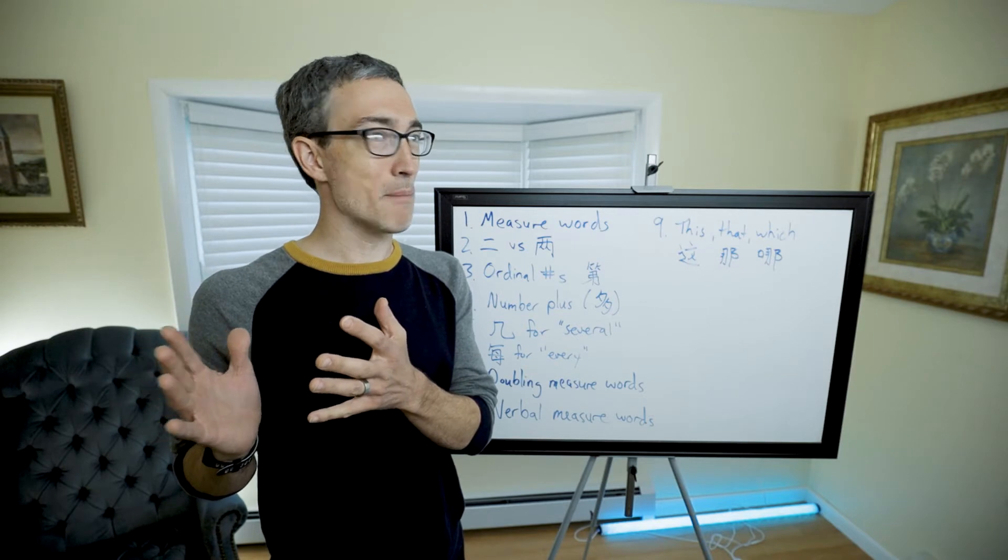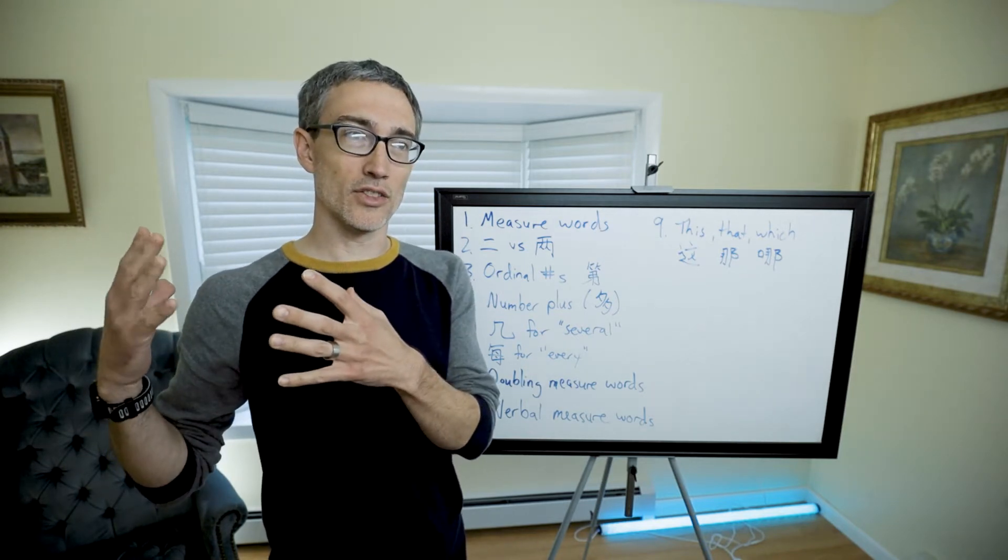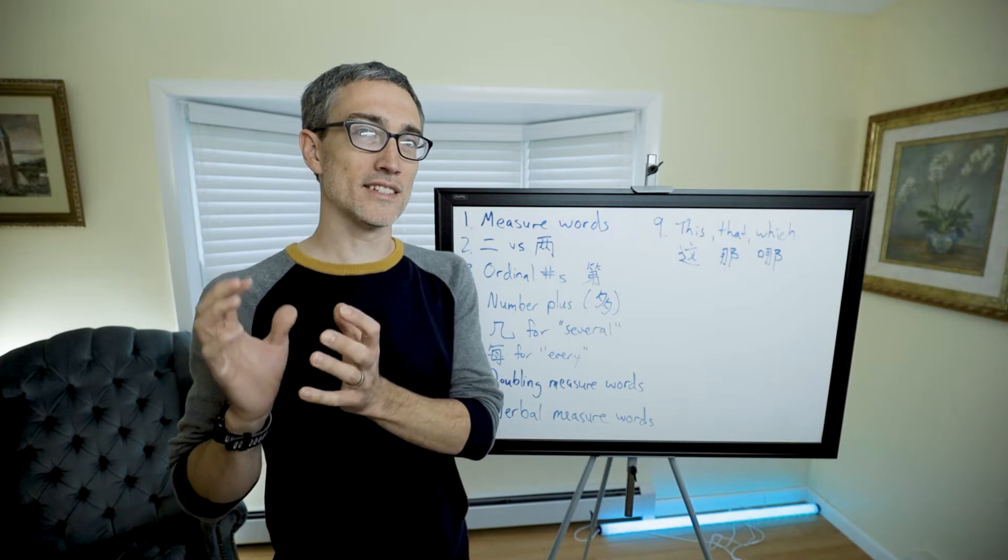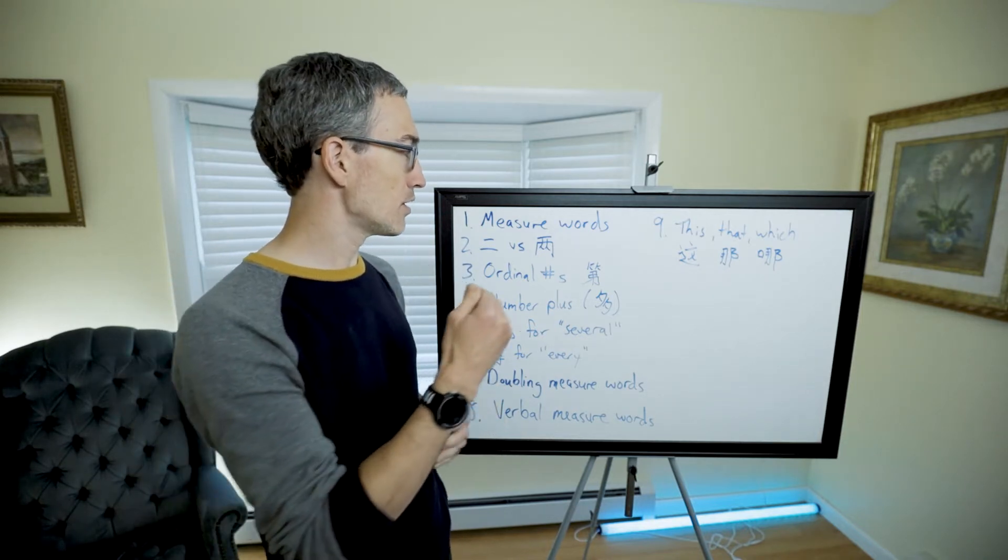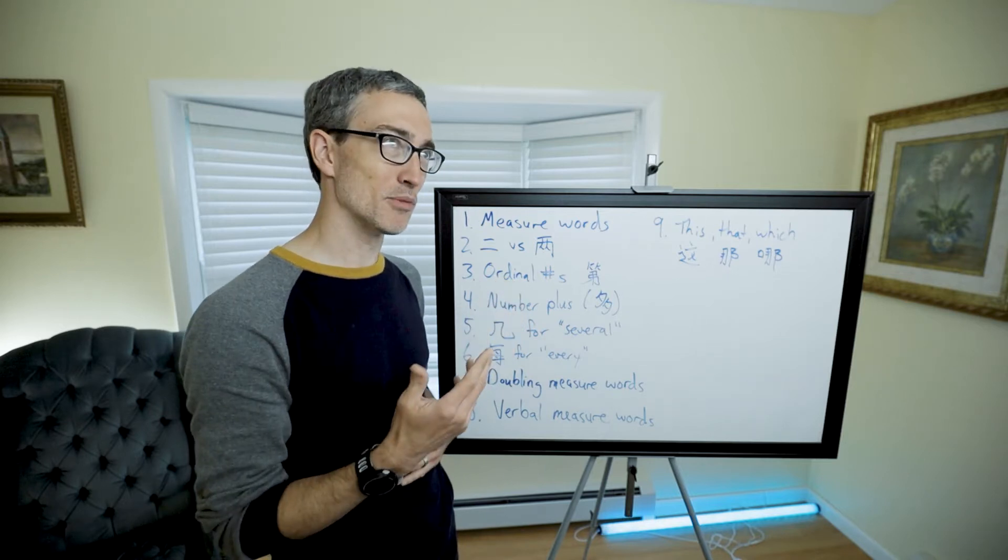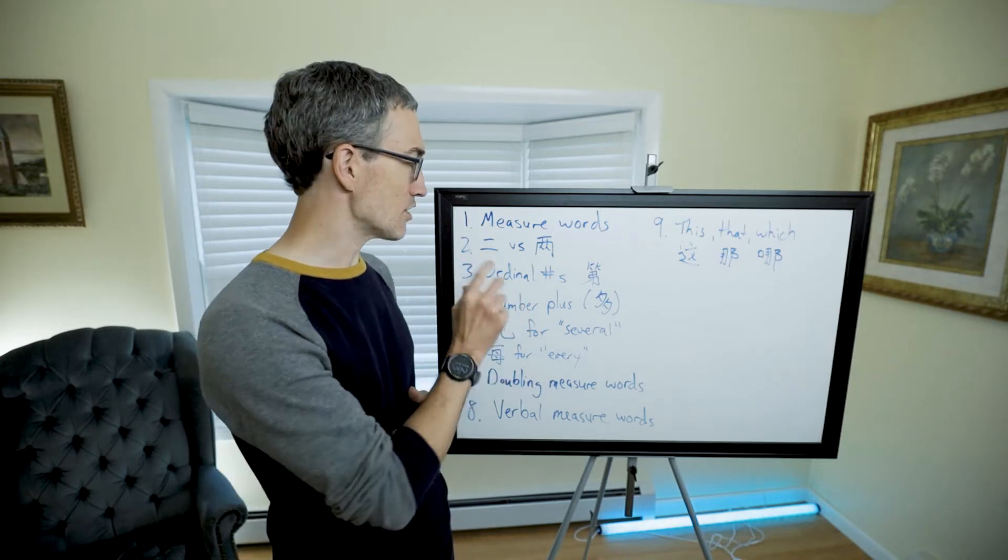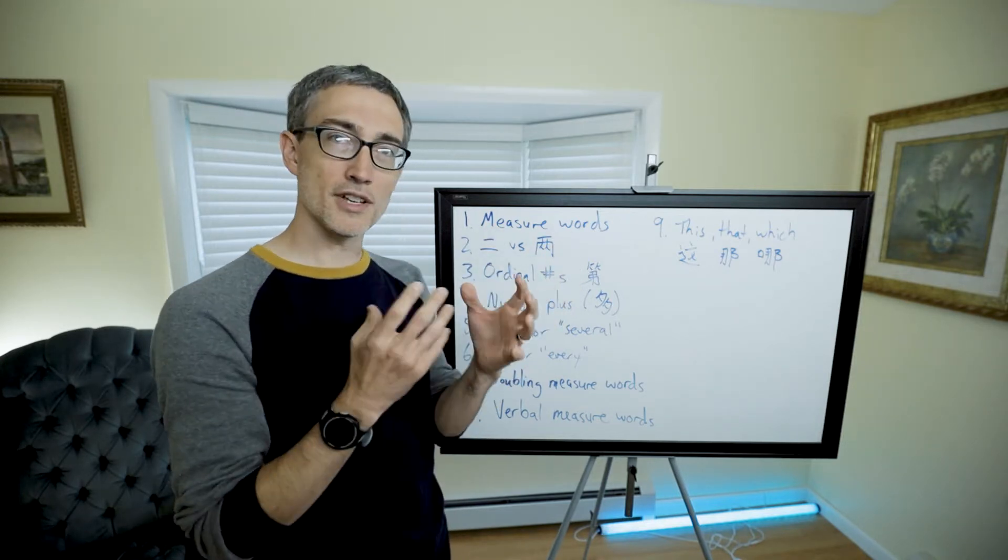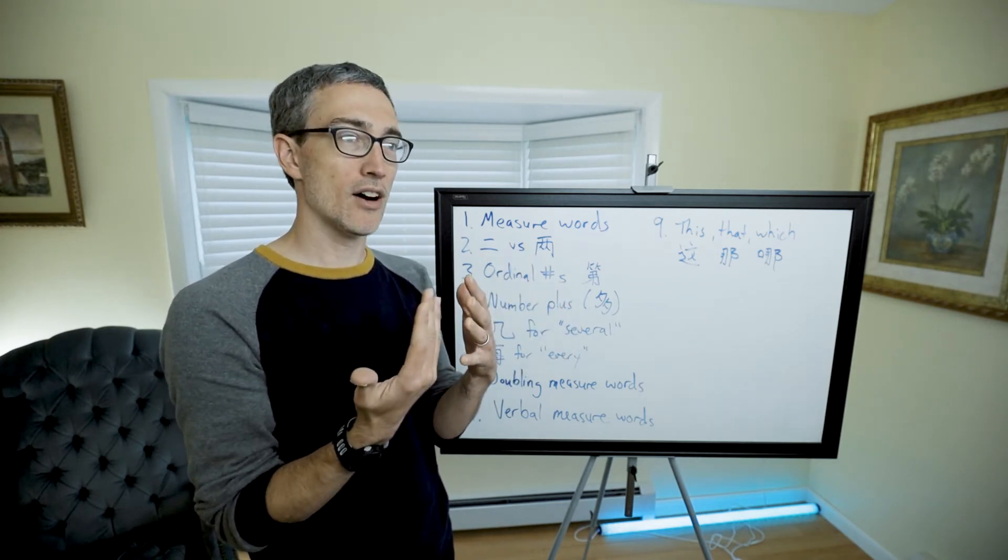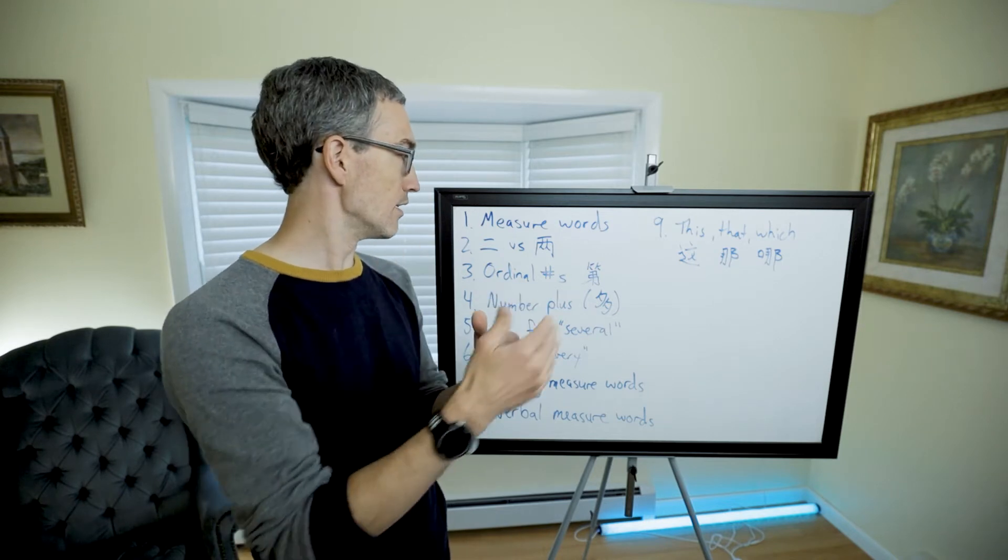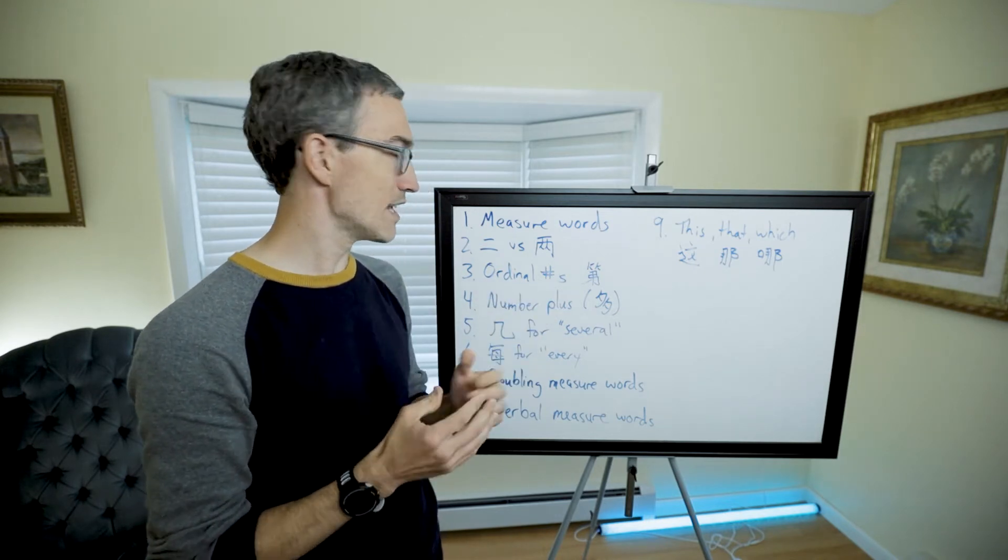Chinese nouns are all mass nouns, so they're not countable by themselves. When you say the noun, it doesn't give you a sense of countability. You need to put a measure word of some kind to make it countable, even if in English it might be a count noun.